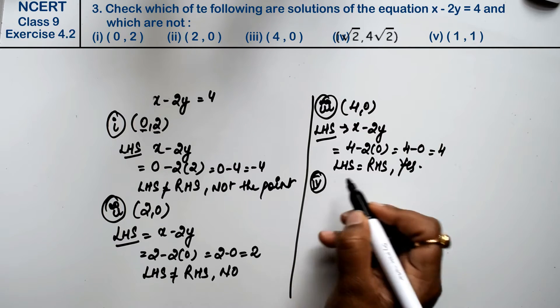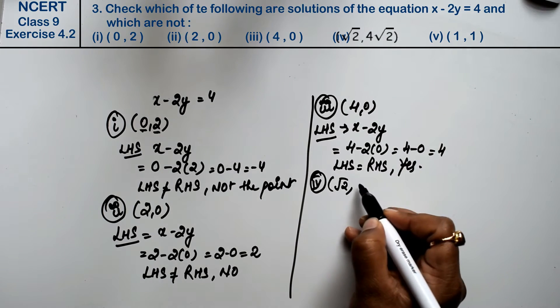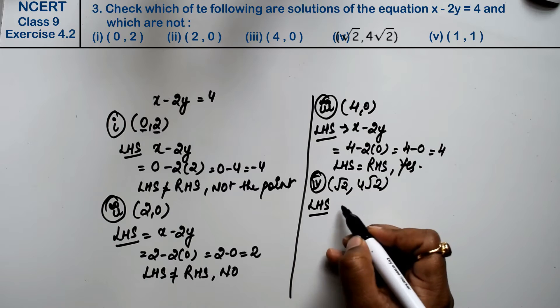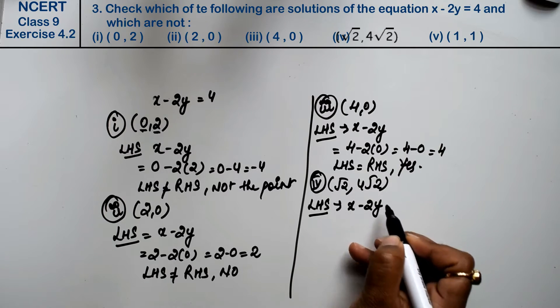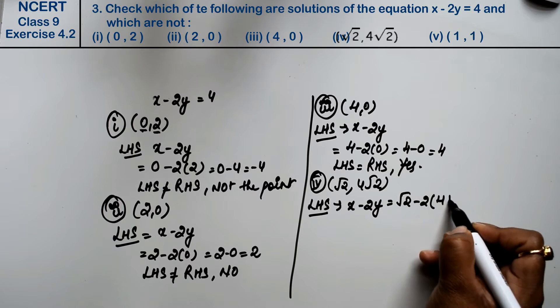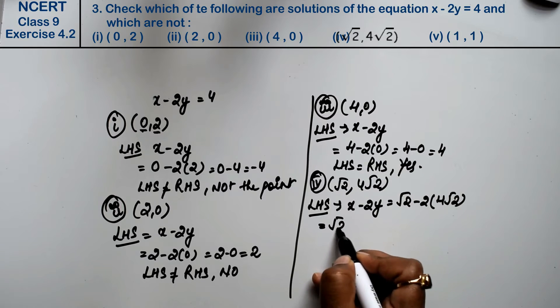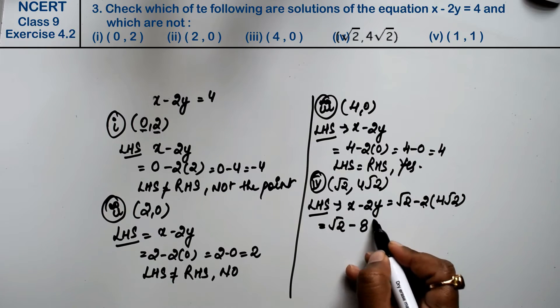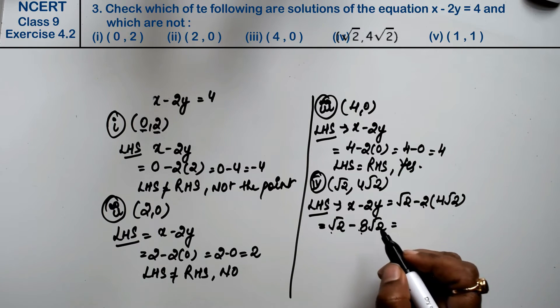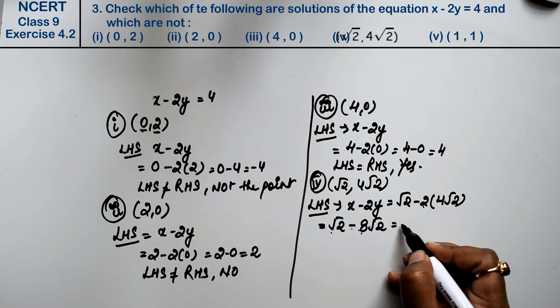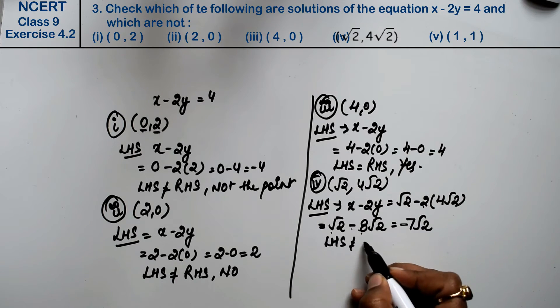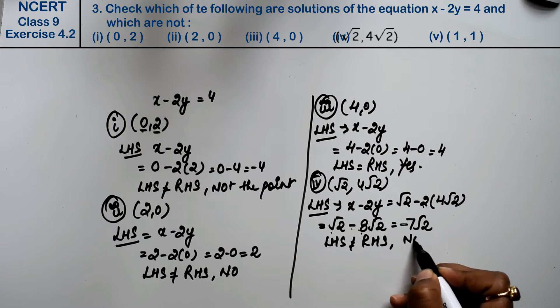Now fourth part. Fourth part is root 2 and 4 root 2. We will put it in the left-hand side. Left-hand side is x minus 2y, that means root 2 minus 2 into 4 root 2. Root 2 minus 8 root 2 is minus 7 root 2. Hence, left-hand side is not equal to right-hand side. Answer is no.